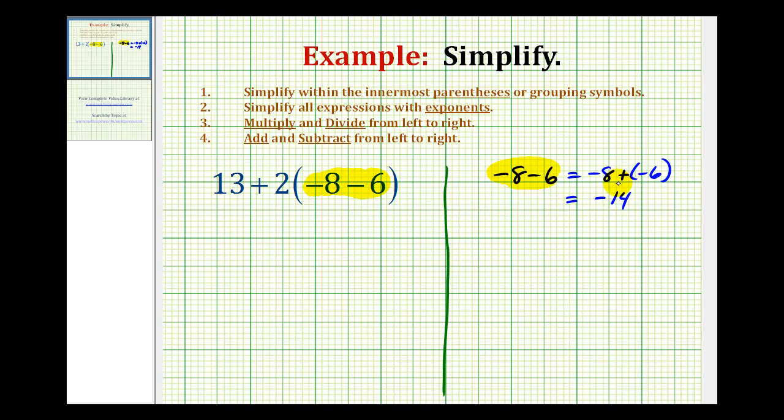Or more formally, the rule is if we add integers with the same sign, we add their absolute values and keep the original sign. So eight plus six is 14, but because they're both negative, the sum would be negative.